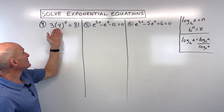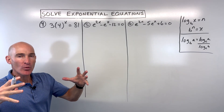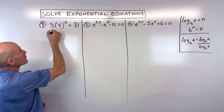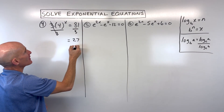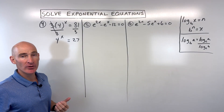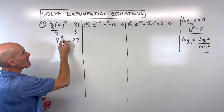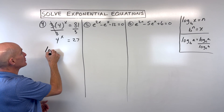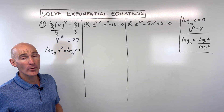For number 4, we have 3 times 4 to the x power equals 81. We're solving for x. We can work from the outside in, trying to isolate 4 to the x. Instead of multiplying by 3, let's divide both sides by 3, giving us 27 on the right and 4 to the x on the left. The inverse of that would be to take log base 4 of both sides: log base 4 of 4 to the x equals log base 4 of 27.